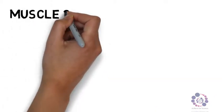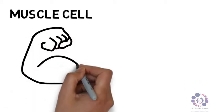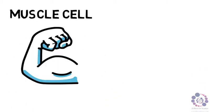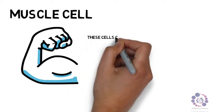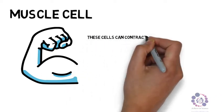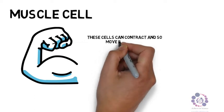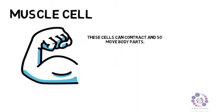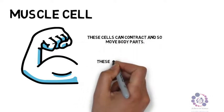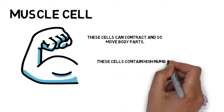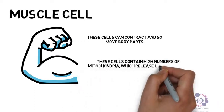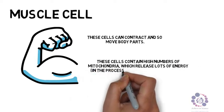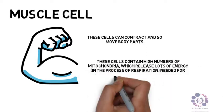Next we have the muscle cells. Muscles are cells which can move — they can contract and relax to allow the body to be able to move. These cells contain high numbers of mitochondria, so they can carry out lots of respiration, releasing lots of energy from glucose to allow our muscles to contract.